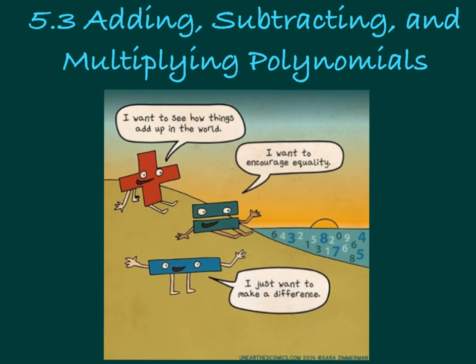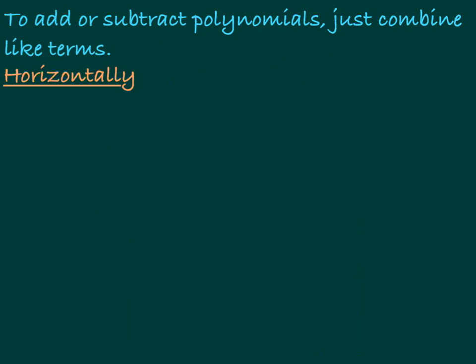This is Mrs. Butcher, and this is video 5.3: Adding, Subtracting, and Multiplying Polynomials. We'll start with the easy stuff. To add or subtract polynomials, all you're doing is combining like terms. We could do this horizontally or vertically, and first I'm going to give you some examples of horizontally.